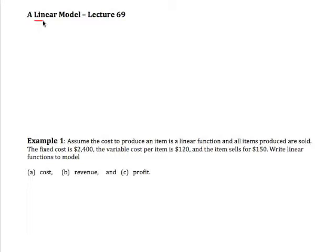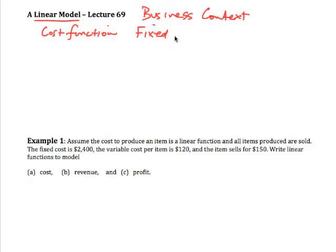Now a simple one is in a business context, and that has to do with the cost function. A cost function is made up of two things. If a business has certain costs to run, then some of those costs are called fixed costs, which might be rent, salaries, or things like that, and then we have variable costs.